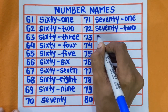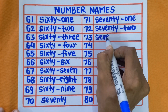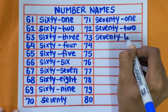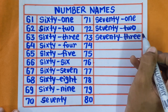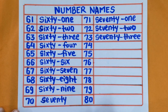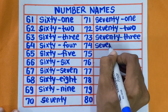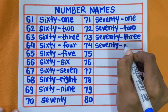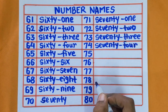Next is 73 — S-E-V-E-N-T-Y-T-H-R-E-E. 73. Next is 74 — S-E-V-E-N-T-Y-F-O-U-R. 74.